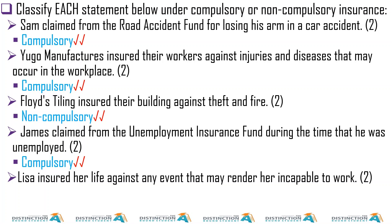James claimed from the UIF — that one is compulsory. Lisa insured her life against any event that may render her incapable to work — this could be an accident or something life-threatening. This is obviously non-compulsory because Lisa has no obligation to do this, but she does it because she wants to.